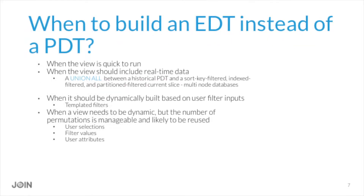When do we build an EDT instead of a PDT? When the view is quick to run, when it should include real-time data, and when it should be dynamically built based on user filter inputs — this comes up on chat all the time. If you have a templated filter in a persistent derived table, it's not going to work; you have to move it to an ephemeral derived table. Persistence is triggered not by user input but by a set value. EDTs also work well when the number of permutations are manageable, such as with user attributes.